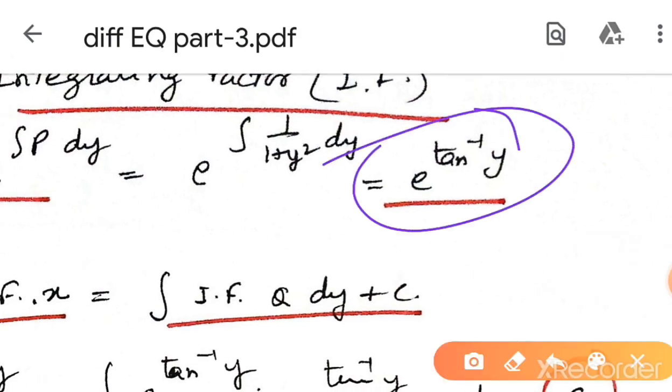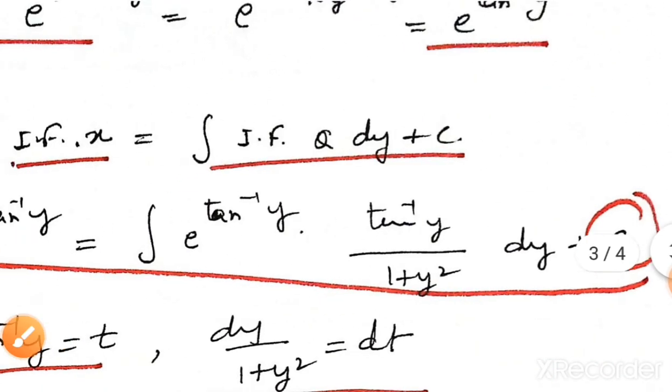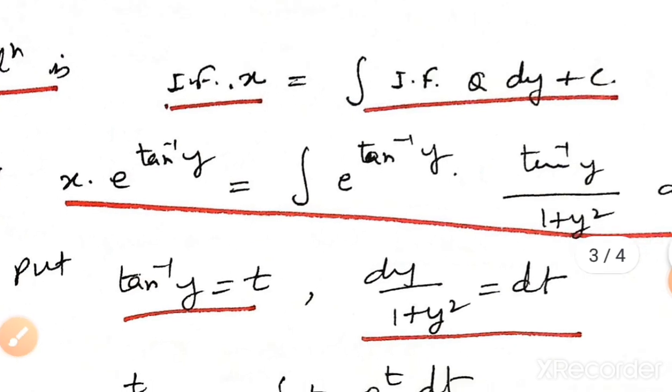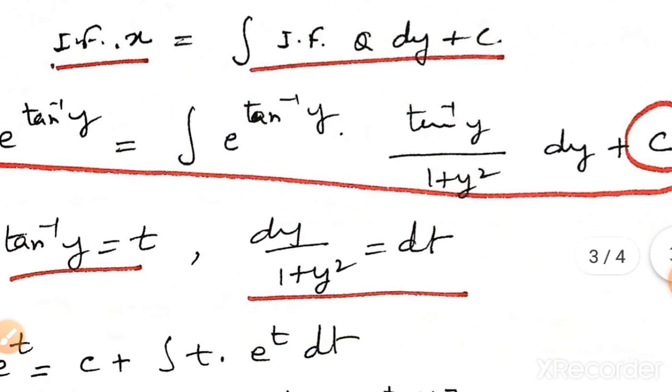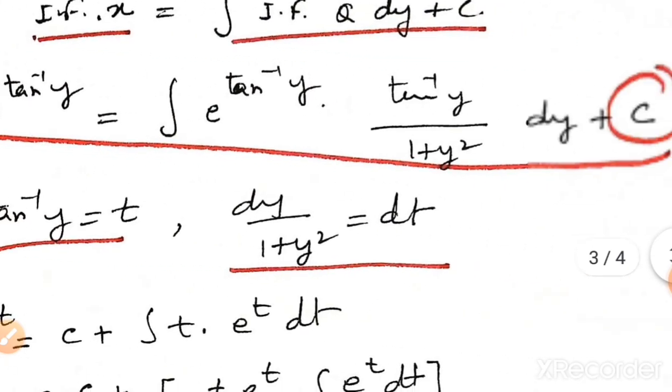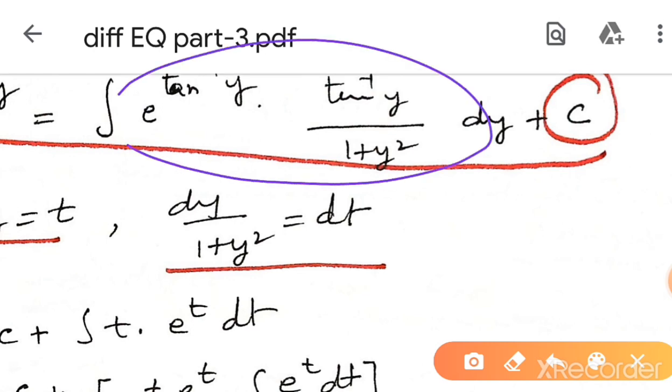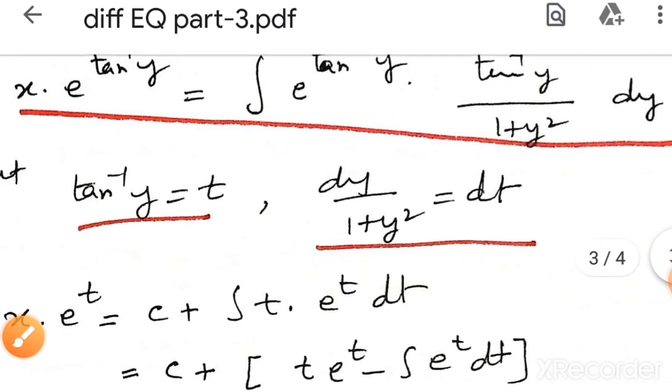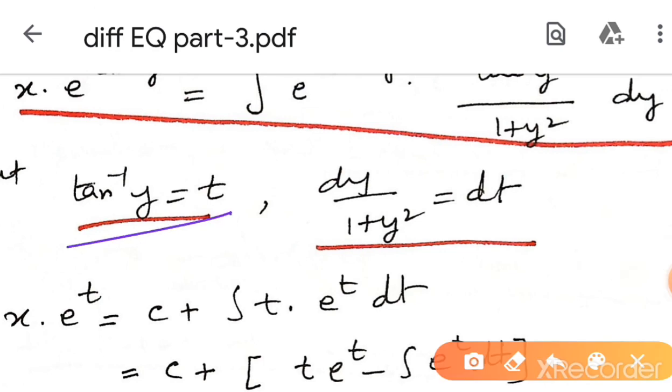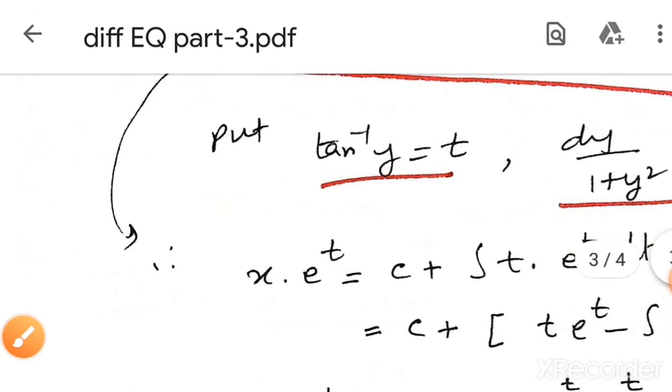The solution is x into integrating factor equal to integration of q into integrating factor dy plus c, where c is a constant.